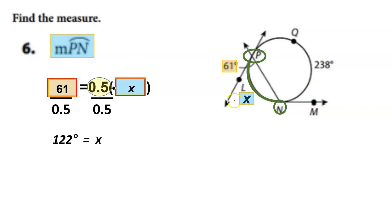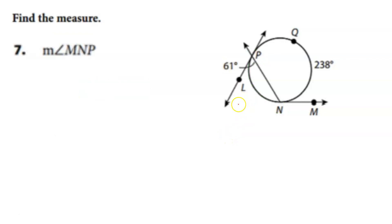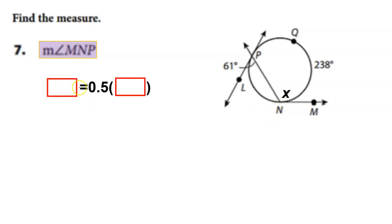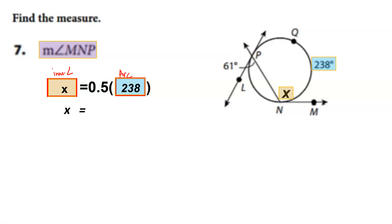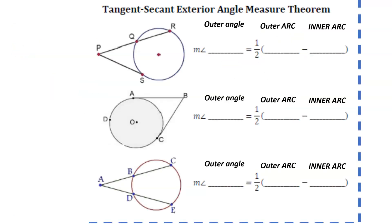The next one uses the same picture but this time we're finding arc MP. That's our internal angle and that's our arc angle. We put X and 238 in their places. Since this one is already set up, we just calculate 0.5 times 238, which equals 119 degrees.